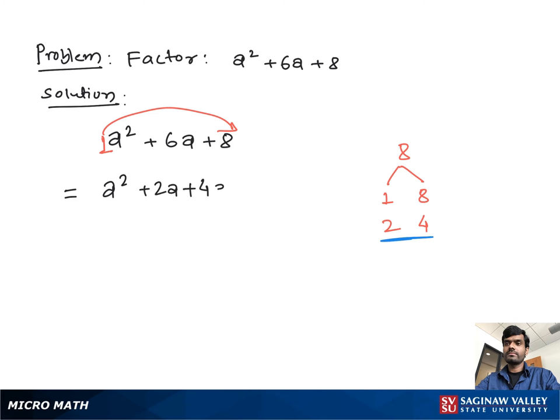So we can write a² + 2a + 4a + 8. Now within this group, we take a as common and get a(a + 2). Then we take 4 as common and get 4(a + 2).